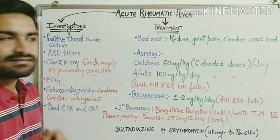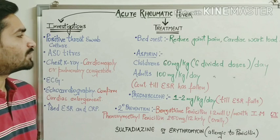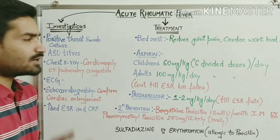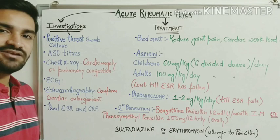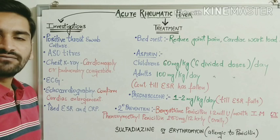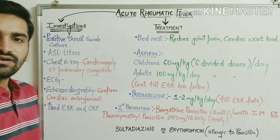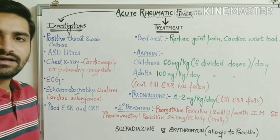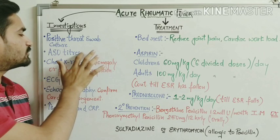Regarding investigations: the first is a positive throat swab culture. You take the patient's throat swab, culture it, and look for streptococcal colonies, since a patient with a past Group A Streptococcal infection may have a throat infection or sore throat. Next is ASO titers — anti-streptococcal O titers — which will also be increased.